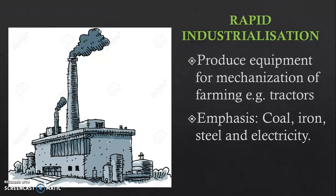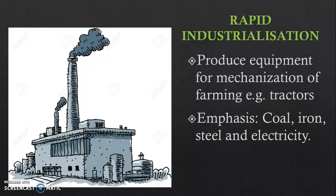Now we move on to the second main policy: rapid industrialisation. Under rapid industrialisation, Stalin wanted to produce equipment for the mechanisation of farming. It's a bit of a circle — under collectivisation he wants more tractors in place and fewer people, who then move to factories and in turn can help build tractors and machinery to support collectivisation. But at the heart of it, the goal was making the Soviet Union a more modernised country. The emphasis in rapid industrialisation was on resources such as coal, iron, steel, and electricity.